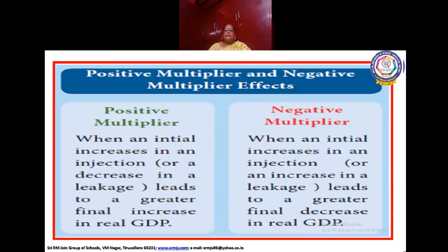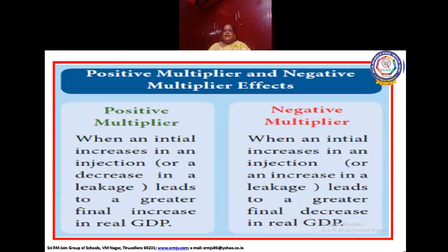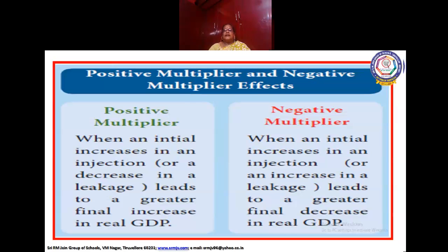Positive Multiplier and Negative Multiplier. Positive multiplier: when an initial increase in an injection or a decrease in a leakage leads to a greater final increase in real GDP, it is called a positive multiplier. Negative multiplier: when a decrease in an injection or an increase in a leakage leads to a greater final decrease in real GDP, it is called a negative multiplier.